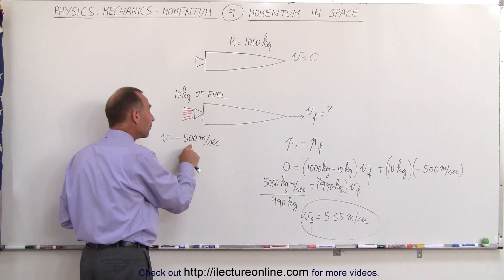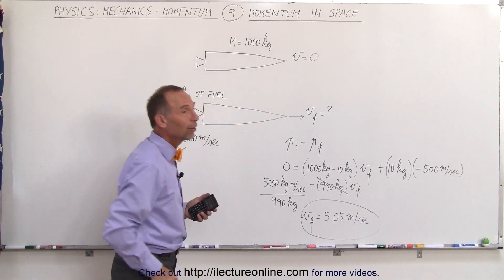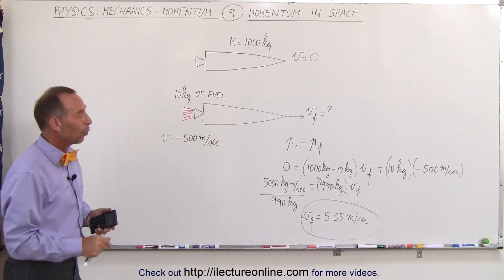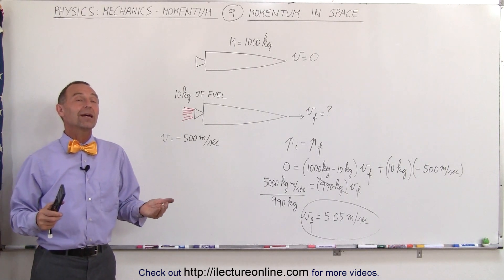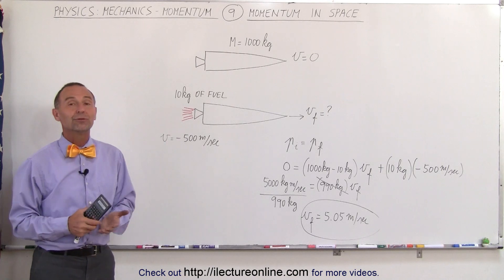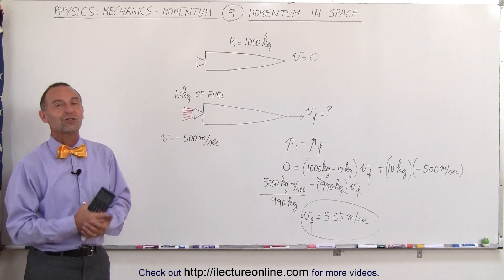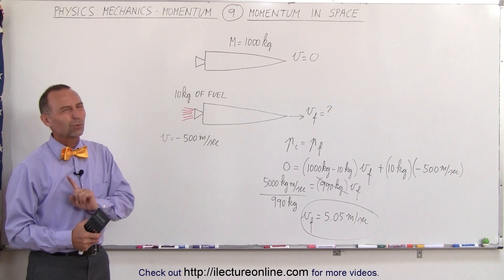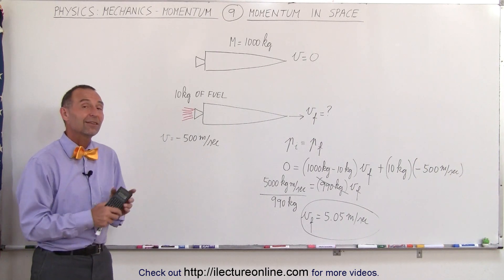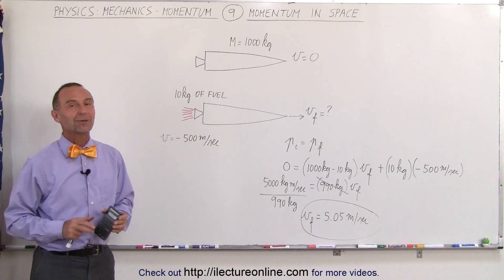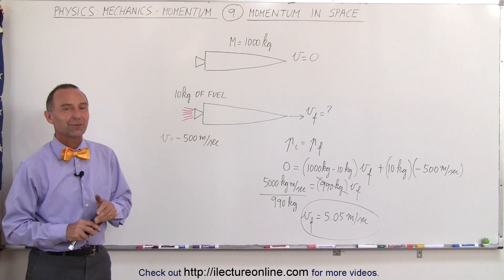So that's how we use momentum in space. It's the only way in which we can get spaceships to move into a different direction or change their velocity. Of course there's one more way we can use gravitational assist from planets nearby but leaving that to another lecture, momentum is the key to changing the velocity of a spaceship.